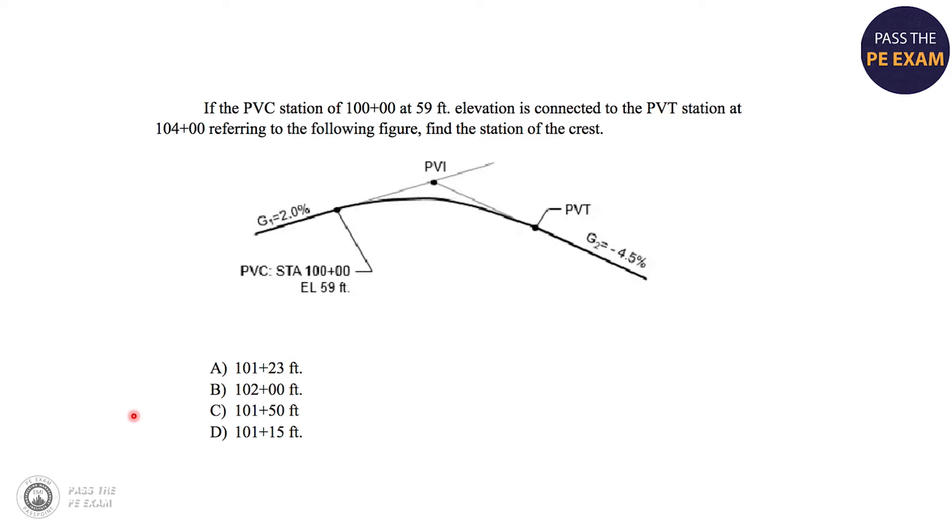Now here's a warning right off the bat. Whenever you have a lot of information, it's usually a trap. We have the station and elevation for the PVC, the grade one and grade two, and the station of the PVT at 104. So what's going on here? It's a trap. And I'm going to show you right now how to avoid falling into the trap that many people will fall into.